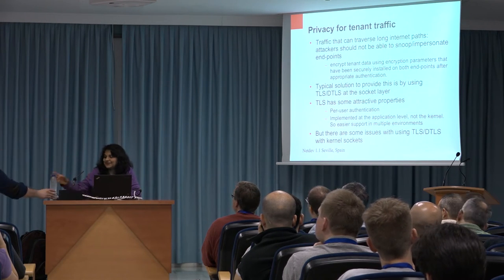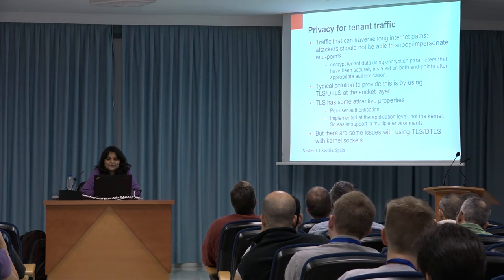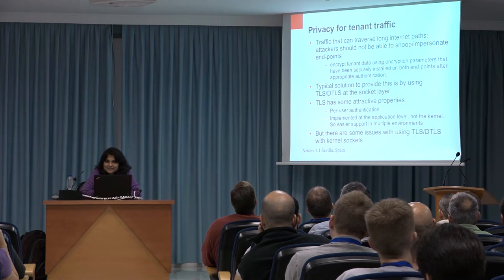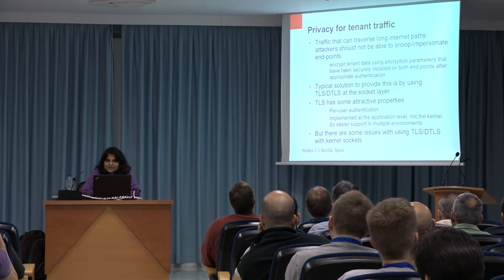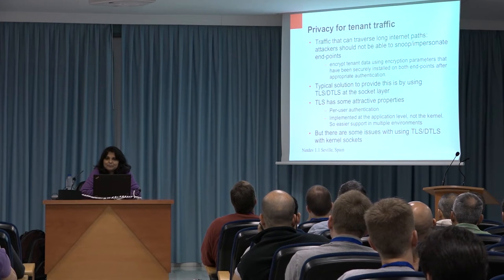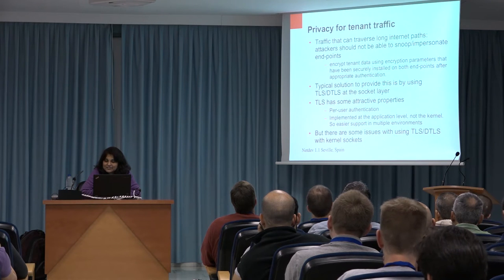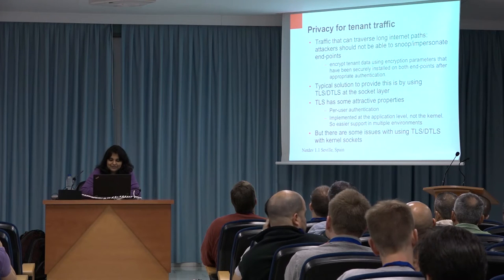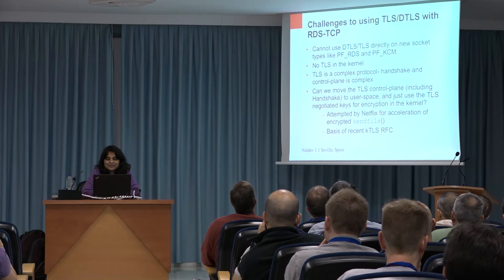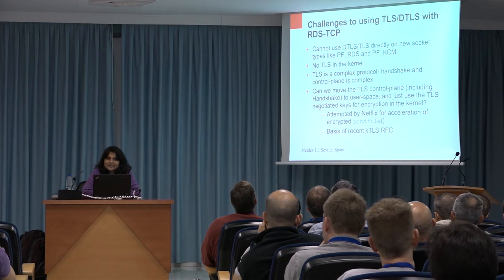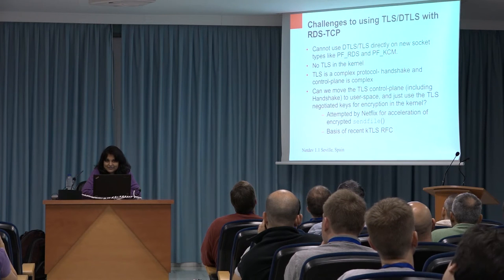For the privacy-for-tenant-traffic issue, we don't want attackers in the middle — untrusted nodes — to be able to snoop or impersonate the endpoints. We've solved this before for SSH. Using TLS and DTLS at the socket layer gives per-user authentication and is implemented at the application level, not the kernel, so it's easier to support in multiple environments. But it's hard to map that to a kernel socket model. For things like RDS and KCM, these use new protocol families — PFRDS and PFKCM — which today's GnuTLS and OpenSSL libraries do not recognize, so you would have to make a lot of changes.